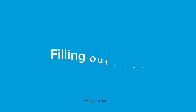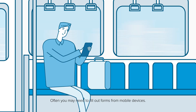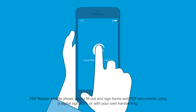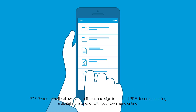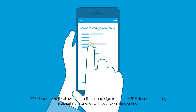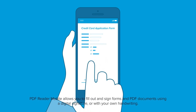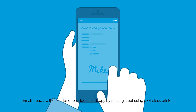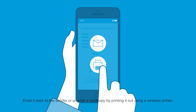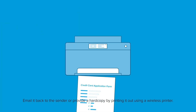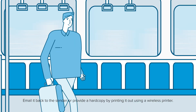Filling out forms. Often you may need to fill out forms on mobile devices. PDF Reader Mobile allows you to fill out and sign forms and PDF documents using a digital signature or your own handwriting. Email it back to the sender or provide a hard copy by printing it out using a wireless printer.